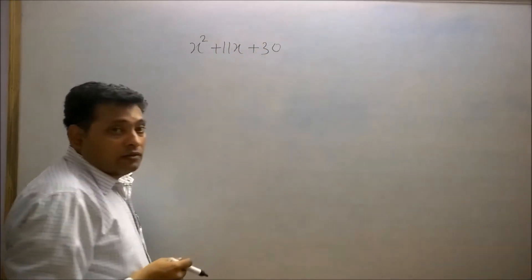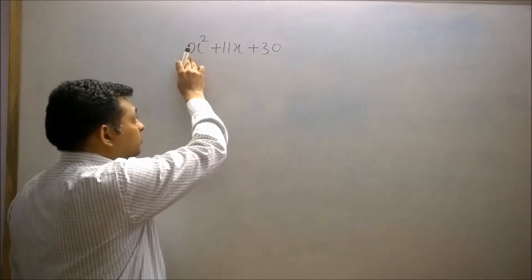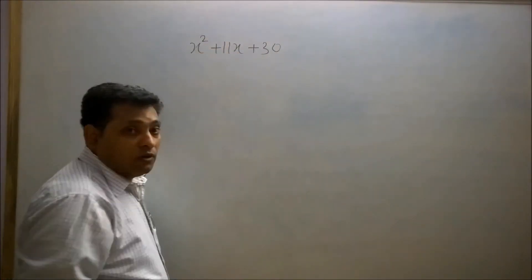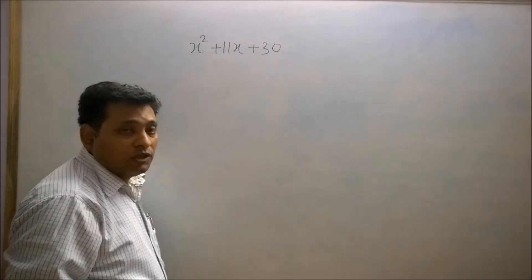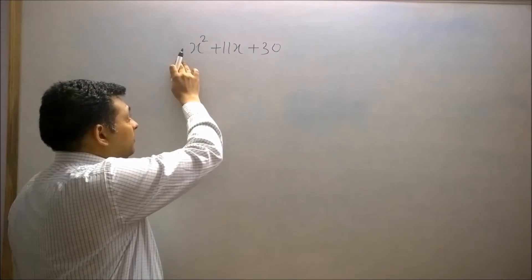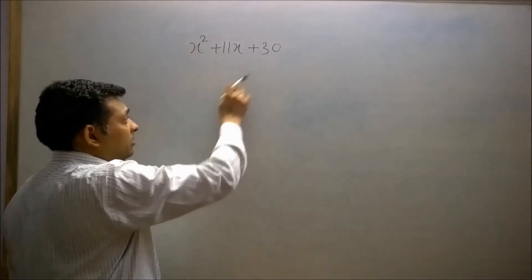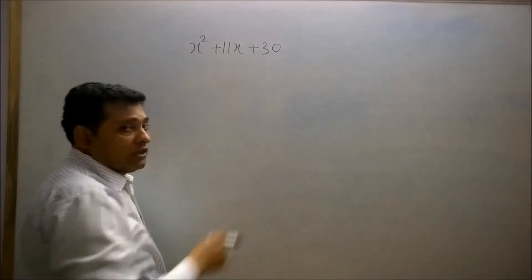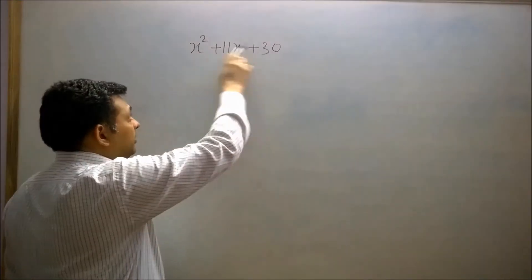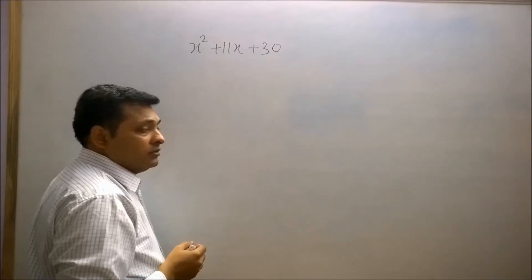Here the coefficient of x² is positive and the constant term is also positive. First of all, we will multiply the coefficient of x² with the constant term, so the product of 30 and 1 is 30.